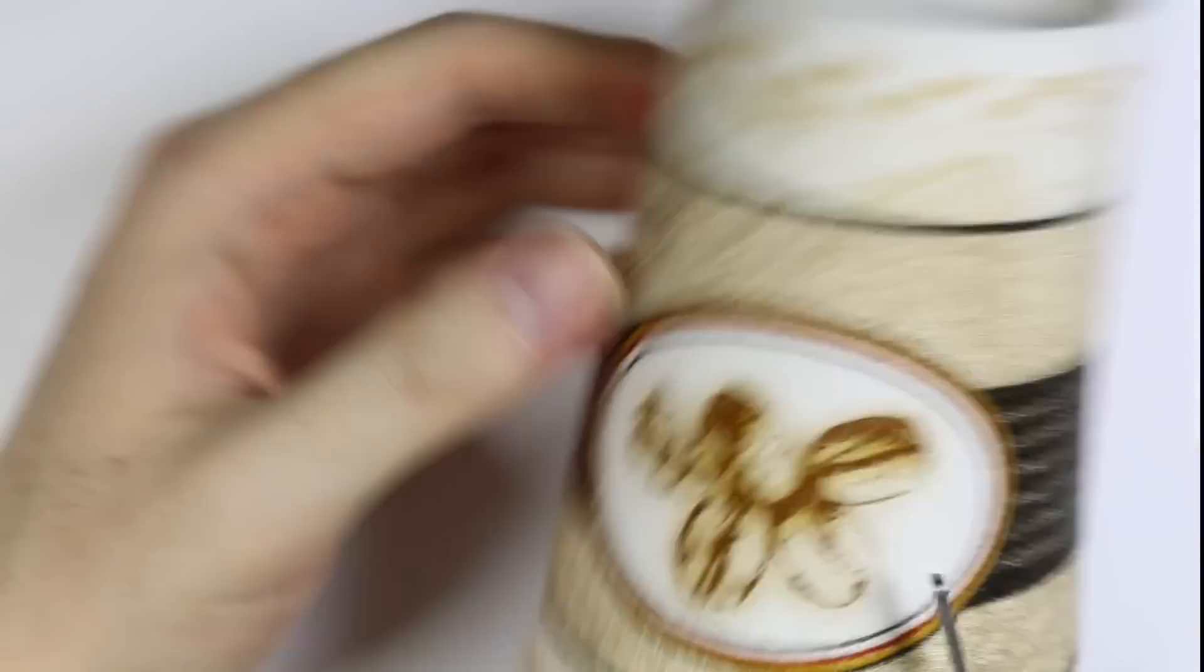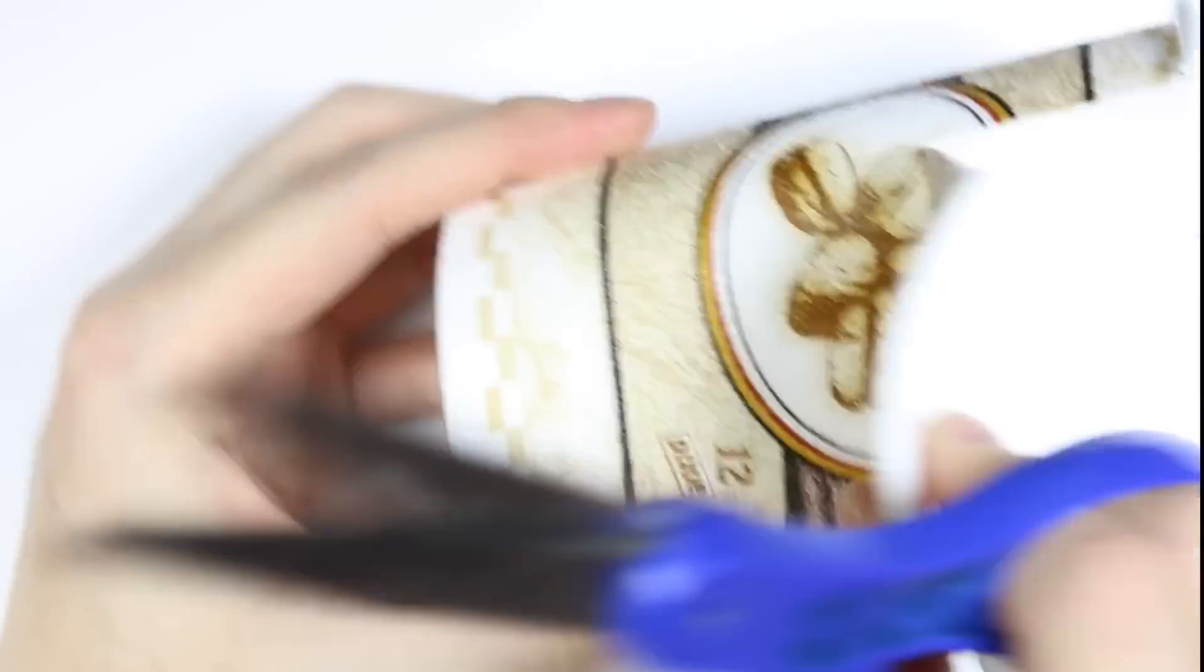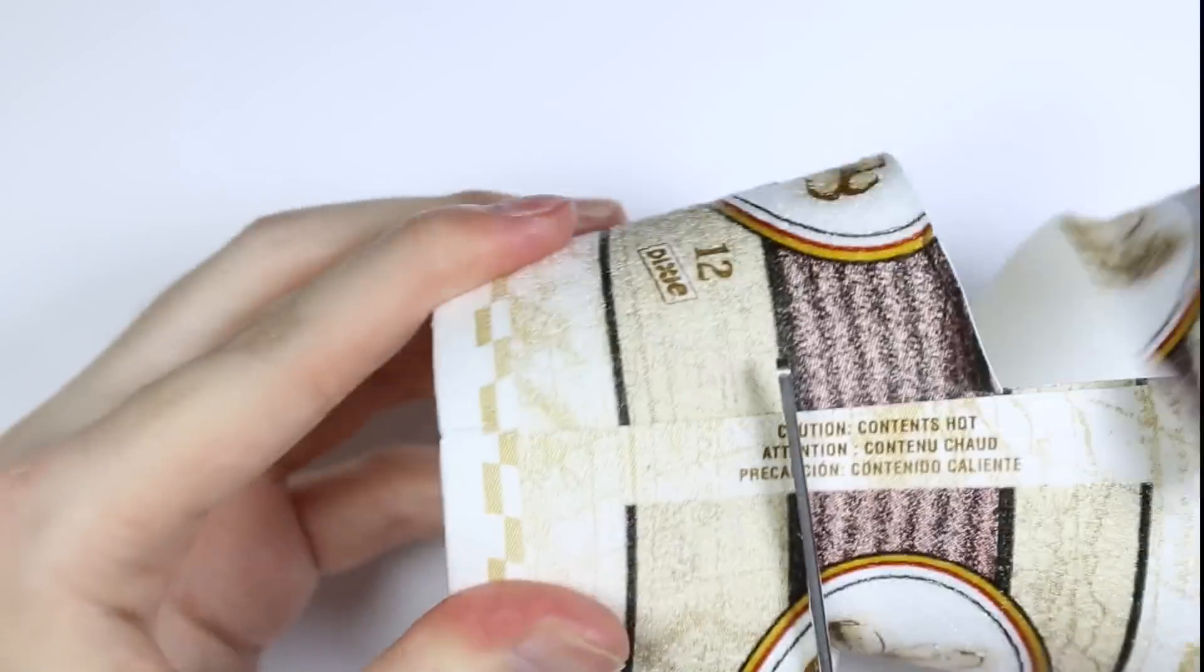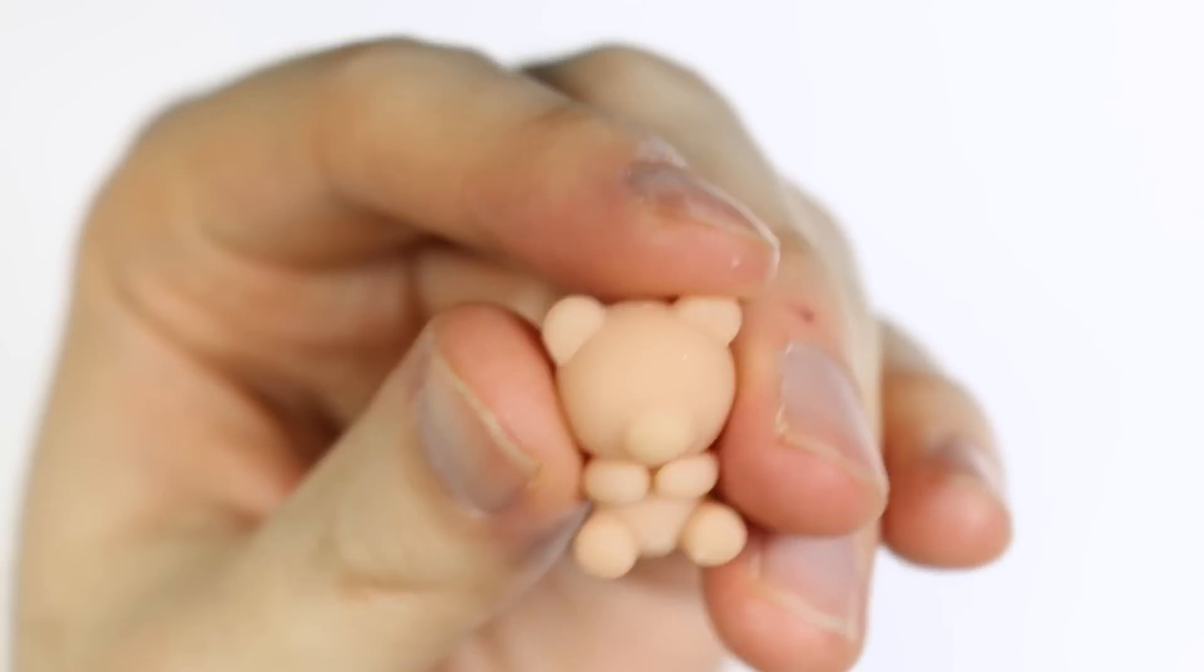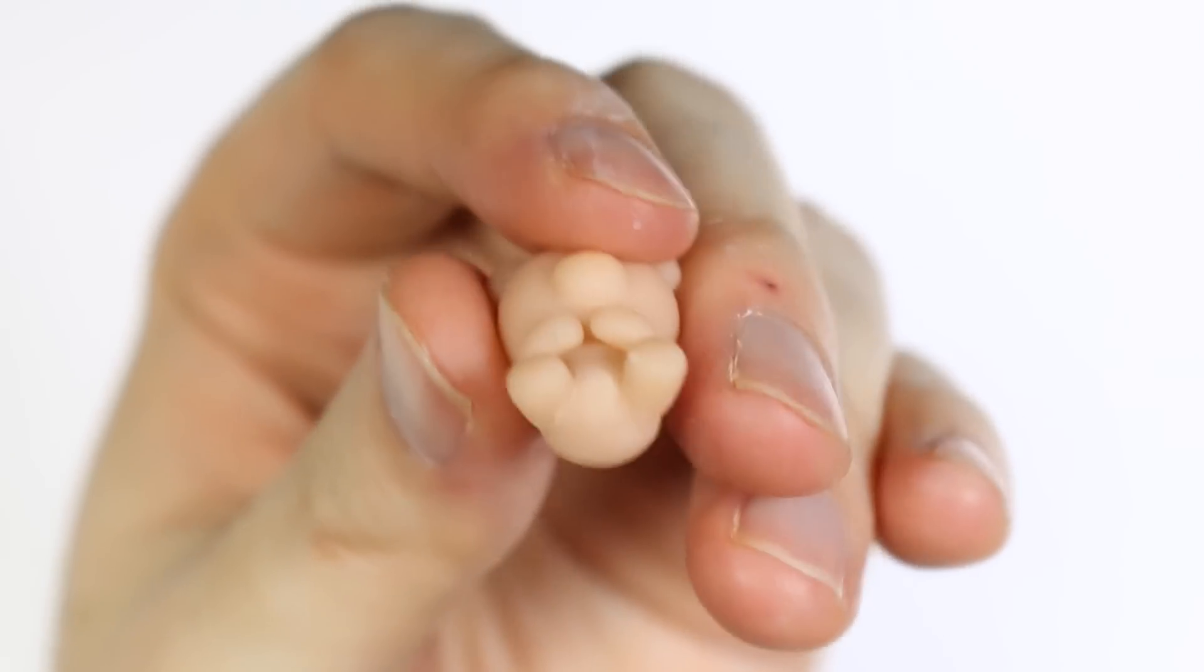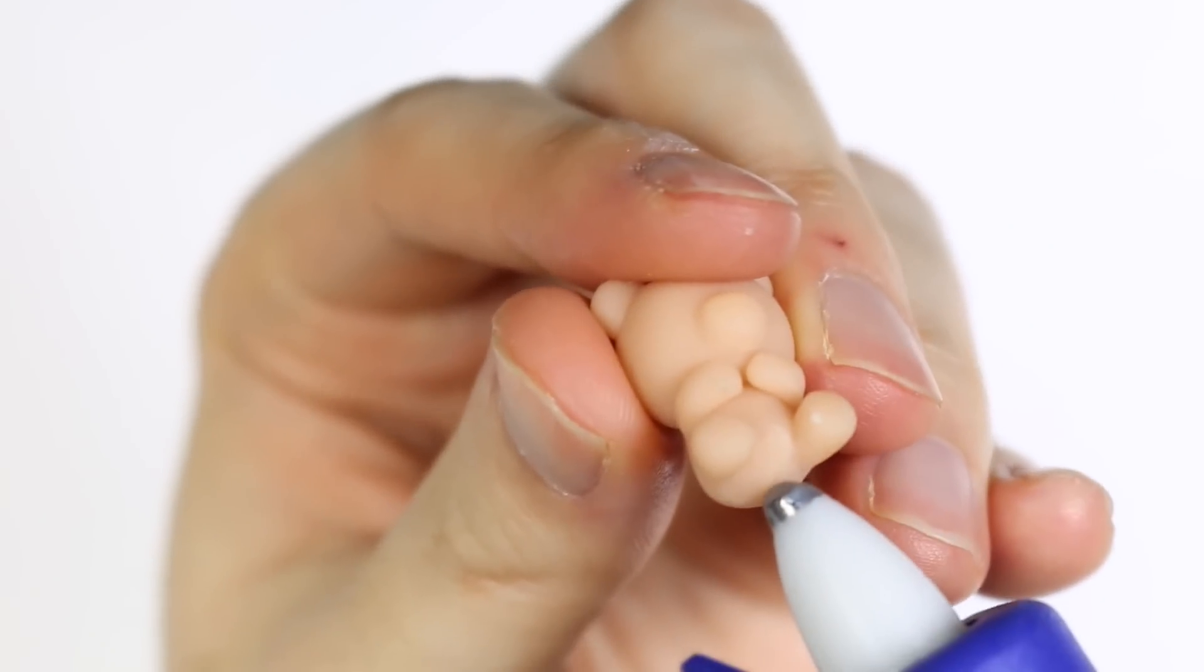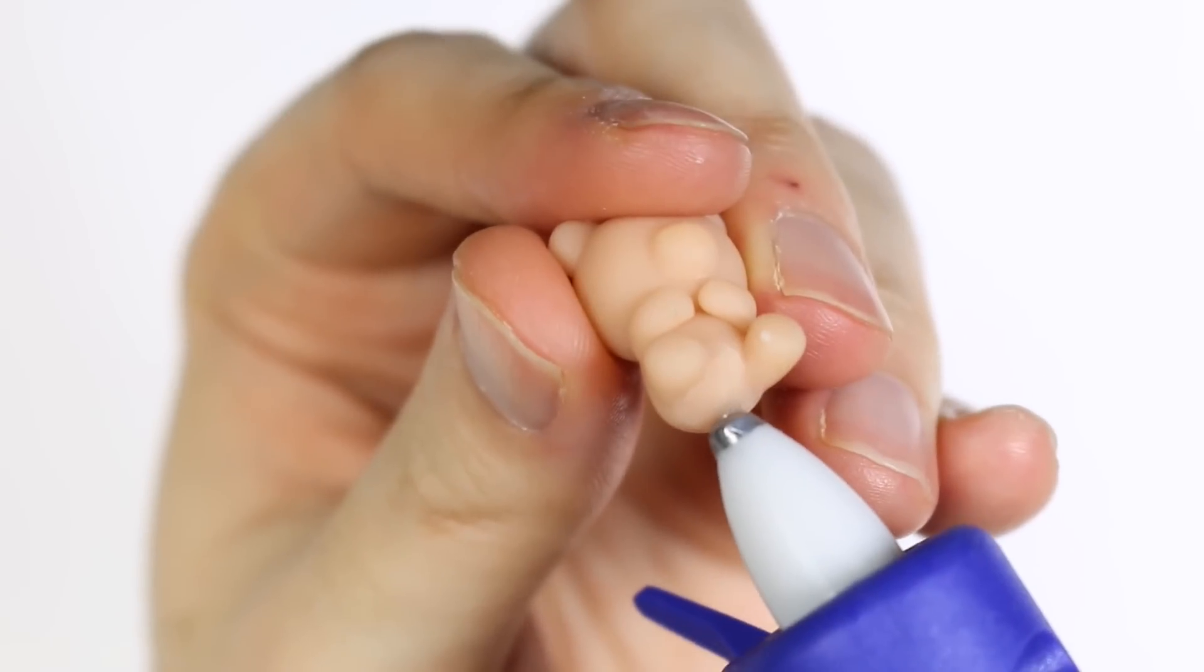So once baked, we're going to need to make the mold. So I'm getting a paper cup and I'm cutting it into an appropriate size to make my mold. Next, I'm going to take some hot glue and apply a layer of hot glue on the bottom of my polymer clay bear. And I'm going to glue that to the bottom of my cup.